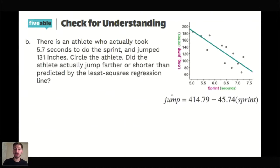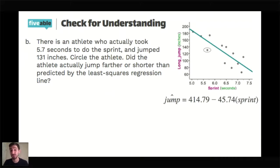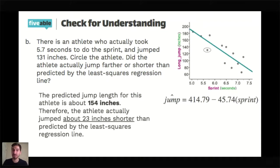If we look at a real athlete represented in this data who took 5.7 seconds to do the sprint and jumped 131 inches, that athlete is represented by a circle on the scatter plot. The question becomes: did that athlete actually jump farther or shorter than predicted by the least squares regression line? If you evaluate the regression line at x equals 5.7, you get about 154 inches. The dot is below the line, so the actual jump was shorter than what the line predicted — about 23 inches shorter. This is a preview of something called residuals. This athlete had a residual of negative 23.